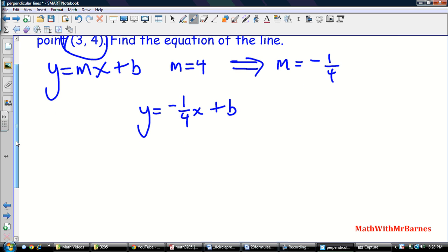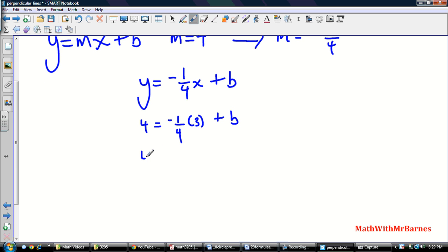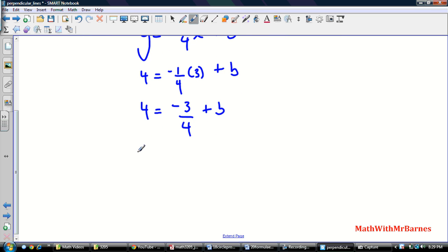We have y equals negative 1 over 4 x. We still don't know what our y-intercept is, our b. We use this point (3, 4), so 4 equals negative 1 over 4 times 3 plus b. So I have 4 equals negative 3 over 4 plus b, or b equals 4 plus 3 over 4.